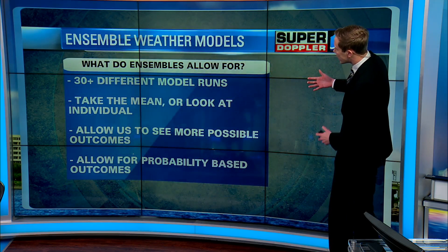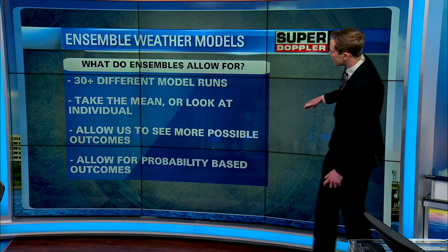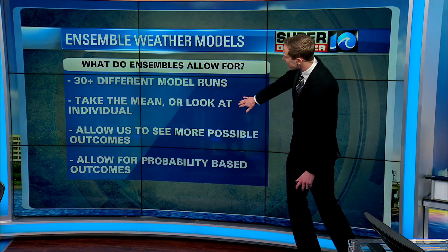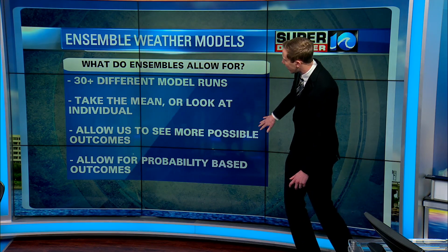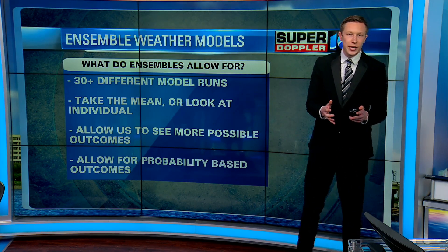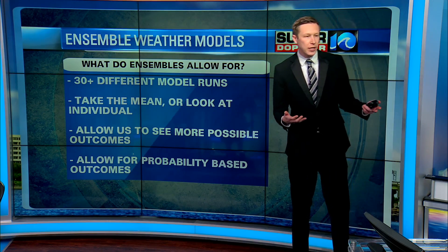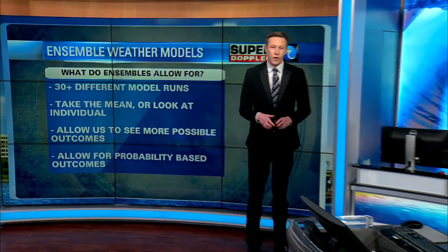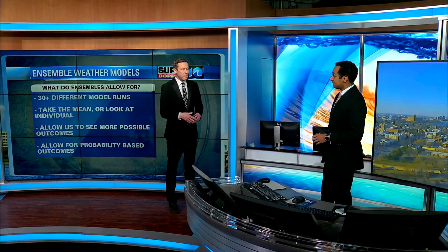And once we get those different outcomes — oftentimes 30 to 50 different outcomes — we're able to take a mean and then allow for us to create probability-based forecasts, which we can then use for multiple different types of weather scenarios, whether it's forecasting snow, forecasting rain, or even during hurricane season, forecasting the path of a tropical cyclone.